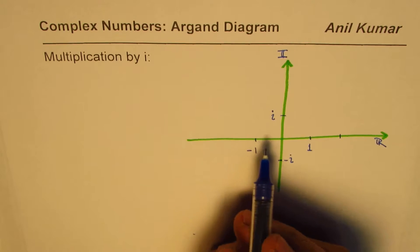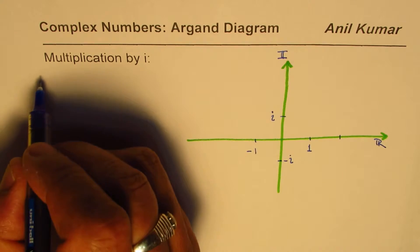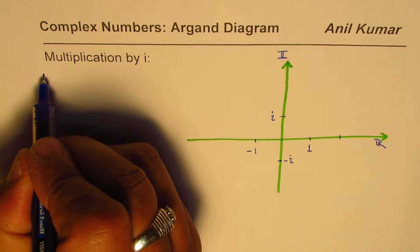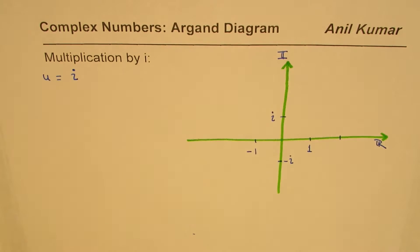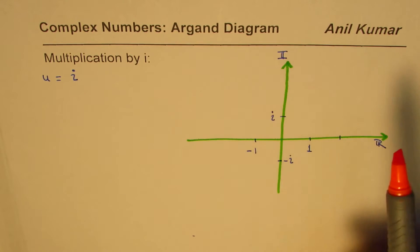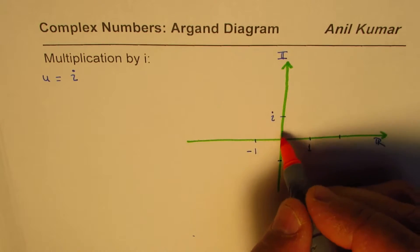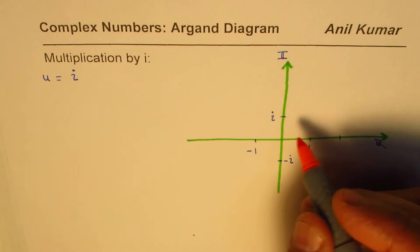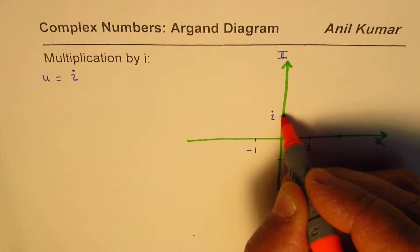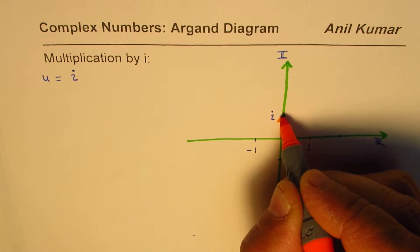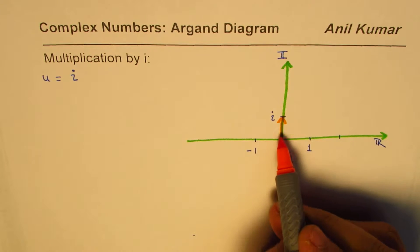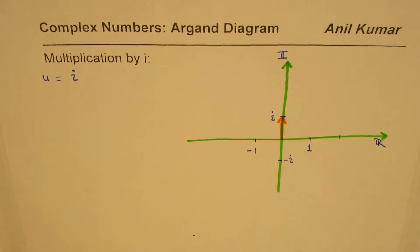To begin with, let's start with a complex number. Let us say u equals i. This is our complex number and we have to represent this complex number on the Argand diagram. So i will be represented - it has no real part, real part is zero - so it is represented by the vertical arrow of unit length as shown here.